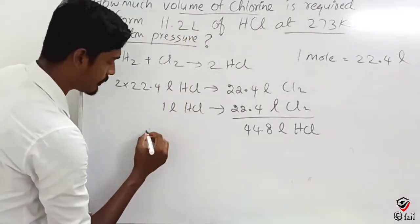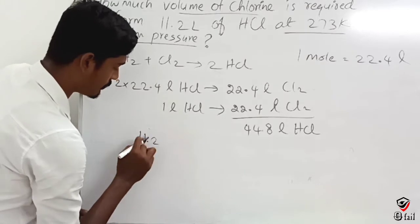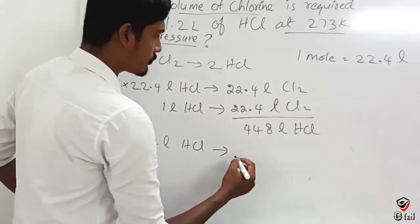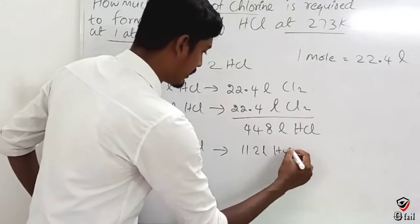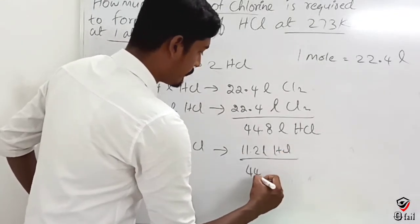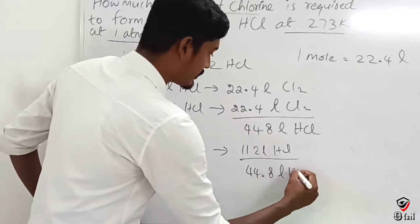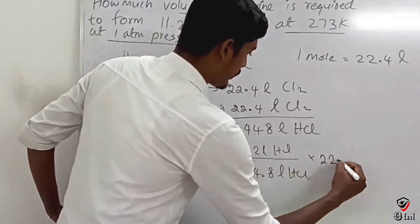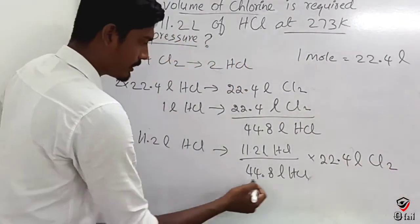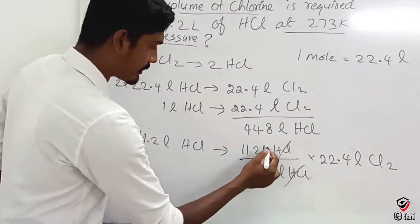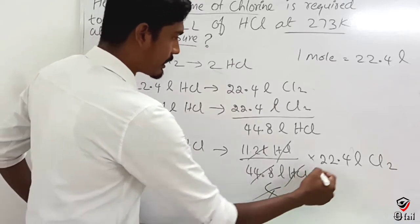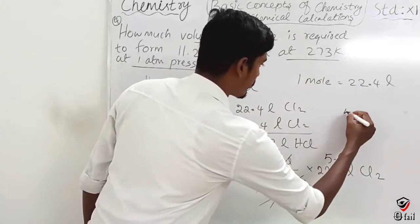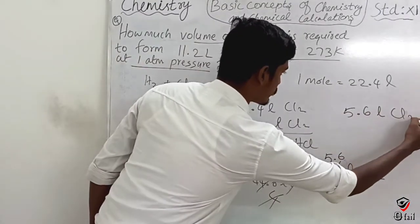The question here: 11.2 liters of HCl divided by 44.8 liters of HCl, multiplied by 22.4 liters of Cl₂. HCl cancels, giving us 5.6 liters of Cl₂.